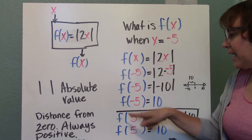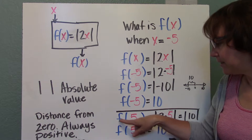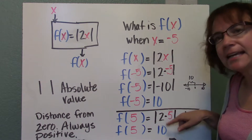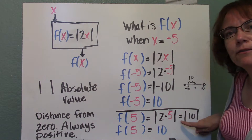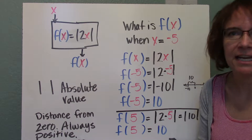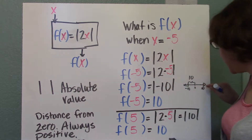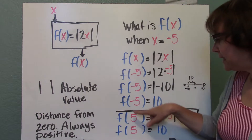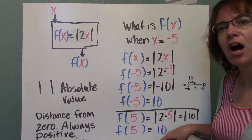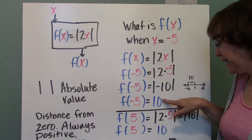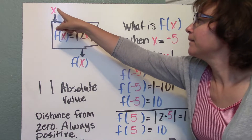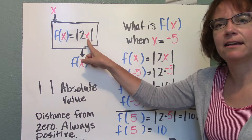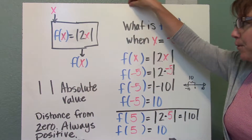Interestingly, we can look at what f of 5 gives us. f of 5 equals the absolute value of 2 times 5, which is the absolute value of 10. The distance from 0 to 10 is also 10, so that gives us 10 as well. So for two different inputs, negative 5 and 5, our absolute value function gives us an output of 10 in both cases. We can check back in with our function machine, substituting 5 and negative 5 for x, to see we get an output of 10 in both cases.